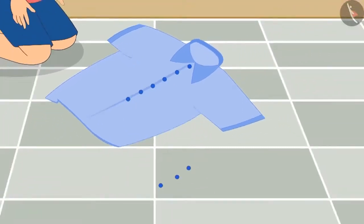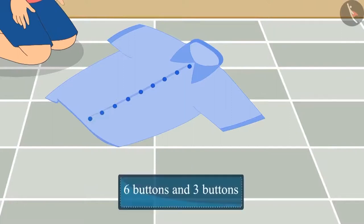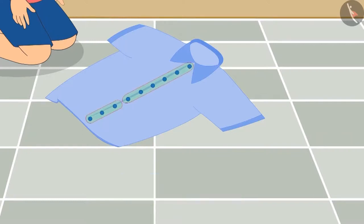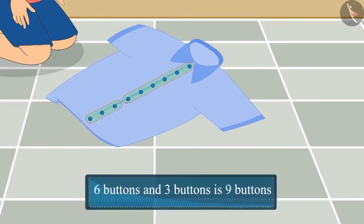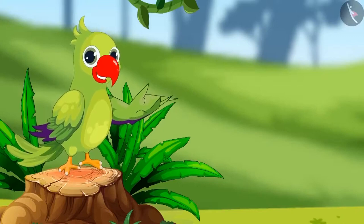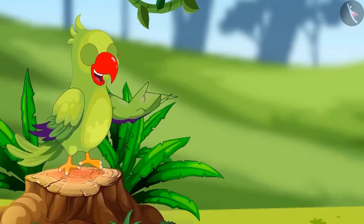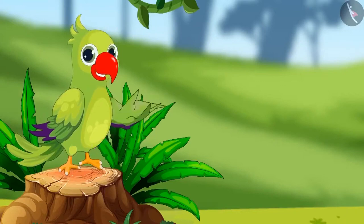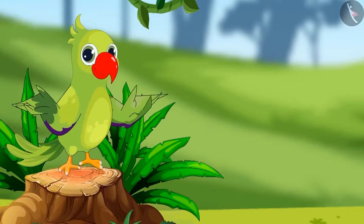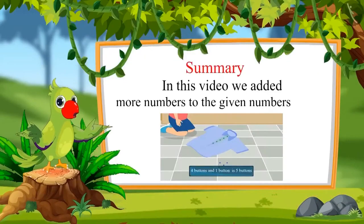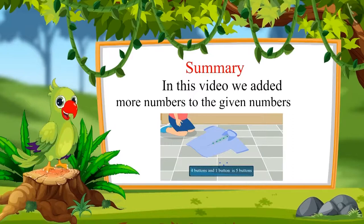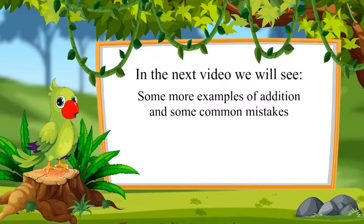In the end Chotu stitched three more buttons on his shirt, so now there are six buttons and three more. What is the total? Yes — nine buttons! Children, I hope you had fun with these examples of addition. Look at things around you and try to add numbers to find the total. In the next video we will see more examples of addition and some common mistakes. Goodbye friends!